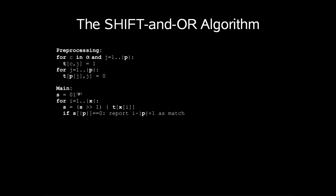Now in our main algorithm, s is set to 01^|p|. For each character in our string, s is set to s shifted 1 to the right.